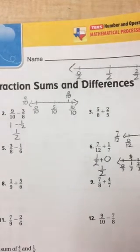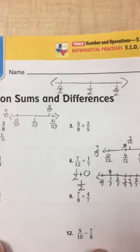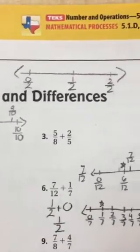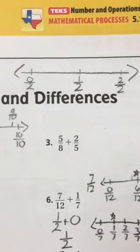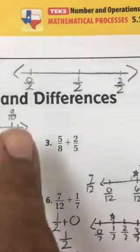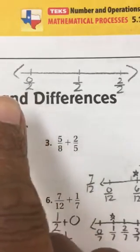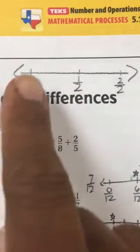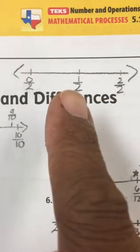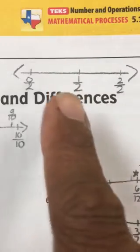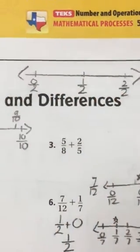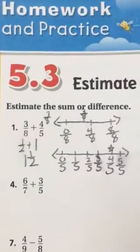So before we estimated a benchmark or used a benchmark to estimate decimals, now we're going to use a benchmark to estimate fractions. So if you look at this benchmark right here, it starts off as 0, 0 over 2. One whole would be 2 over 2. So in the middle of that, the fraction would be 1 half. So that's 0, half, and then one whole. So we'll use that to estimate our fractions.